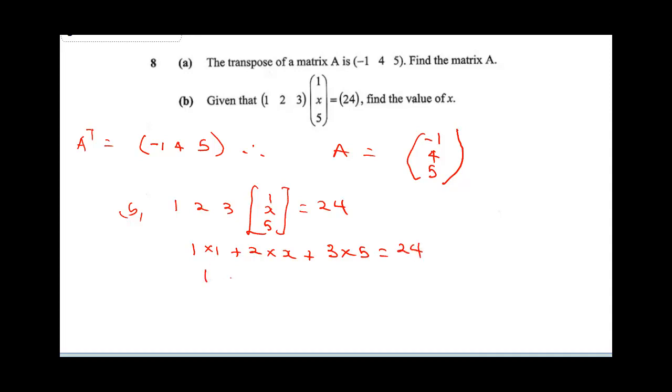This is going to be 1 plus 2x plus 15 equals 24. This is going to be 2x plus 16 equals 24. Collecting our like terms, 2x is going to be 24 minus 16. So 2x equals 8. Therefore our x is going to be 8 over 2, and that will give us 4.